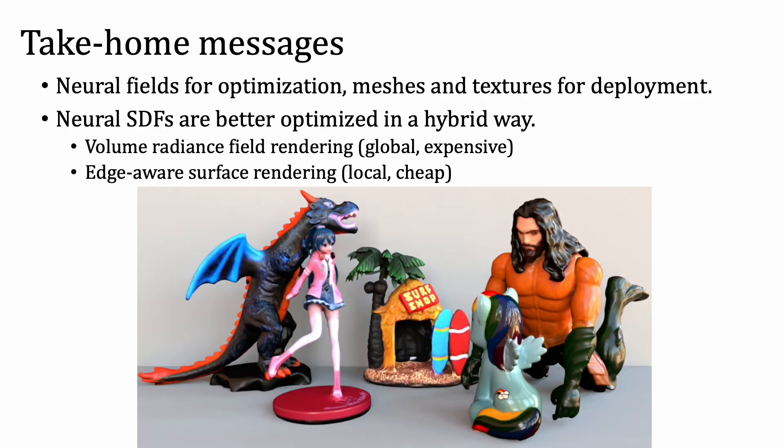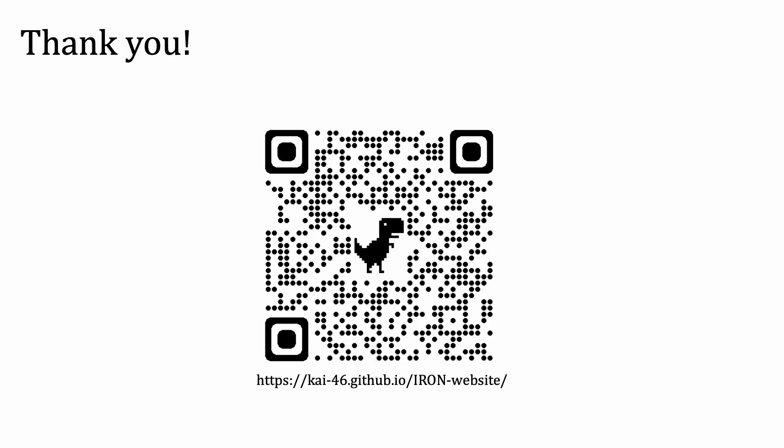To conclude, we find that it is better to use neural fields for optimization while meshes and textures are used for deployment, so we can enjoy the benefits from both worlds. We also find that neural SDFs are better optimized in a hybrid way: using the more global and compute-expensive volume rendering to quickly establish geometry, followed by the local and less compute-expensive edge-aware surface rendering for recovering geometry details. Thank you for watching — please check our project page for more information and open source implementations.